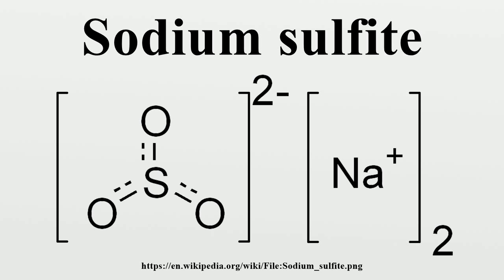Preparation: Sodium sulfite can be prepared in the lab by reacting sodium hydroxide solution with sulfur dioxide gas: 2 NaOH + SO2 → Na2SO3 + H2O. Evolution of SO2 by adding a few drops of concentrated hydrochloric acid will indicate if sodium hydroxide is nearly gone, turned to aqueous sodium sulfite.